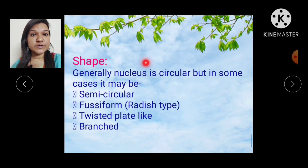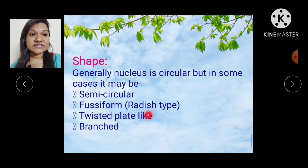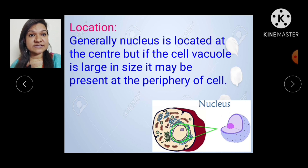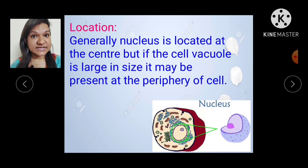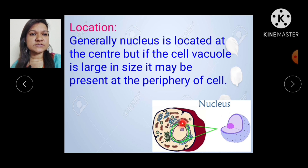The shape of nucleus: generally, nucleus is circular, but in some cases it may be semi-circular, fusiform (reddish type), twisted, plate-like, or branched. Regarding the location of the nucleus: generally, nucleus is located at the center of the cell, but if the cell vacuole is large in size, it may be present at the periphery of the cell.